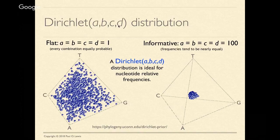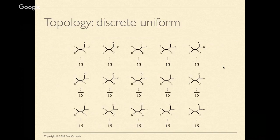What prior do you put on the tree topology? The simplest possibility is a discrete uniform distribution: for five unrooted taxa there are 15 possible topologies, so each gets prior probability one-fifteenth. This is the simplest possible distribution for tree topologies.